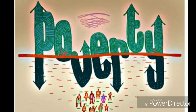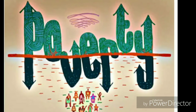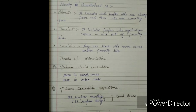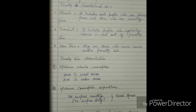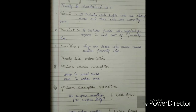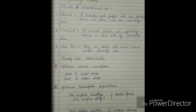We will further study determination of poverty line in our next segment. Before that, we will see the topic of categorizing poverty. Poverty is categorized as chronic poor, transient poor, and non-poor.